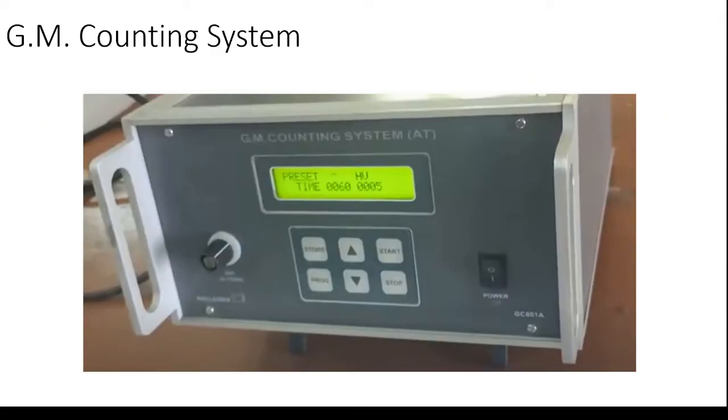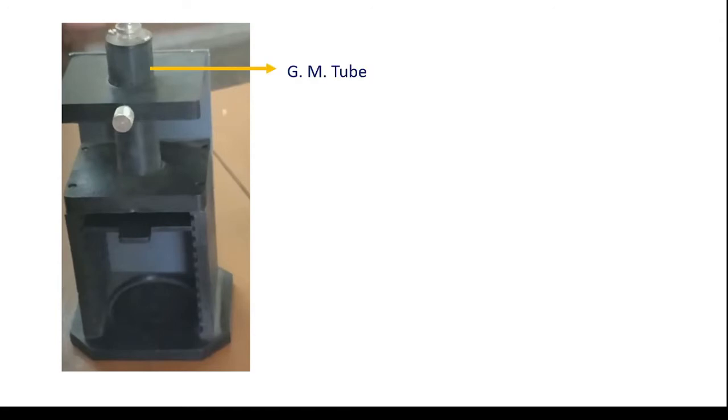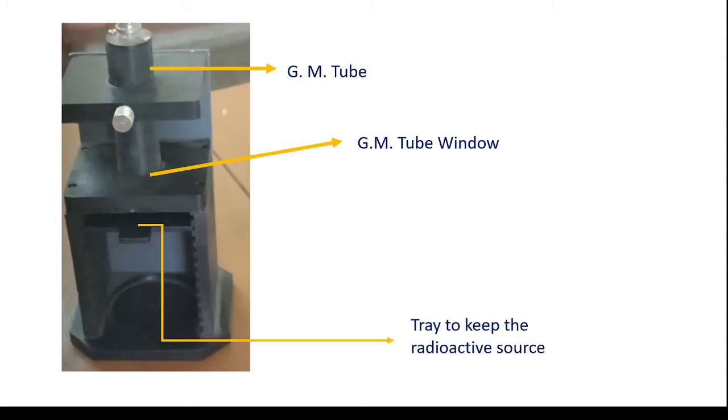So in our lab this is the GM counting system which we use and right now what is being displayed is that we are setting the time for which GM counter will be collecting data which is 60 seconds. And this is the GM tube. You can see where the GM tube window is and this is the tray to keep the radioactive source.